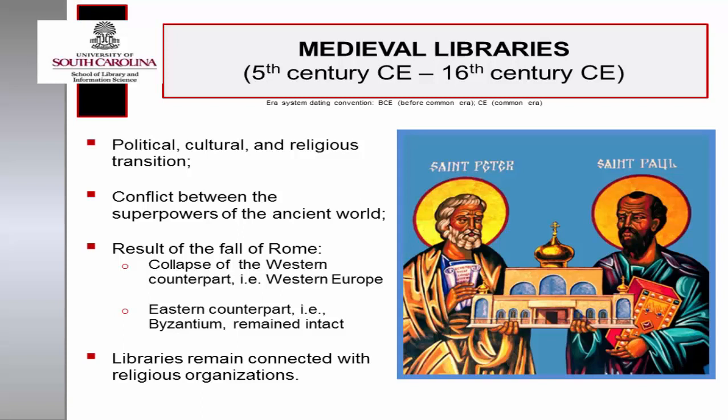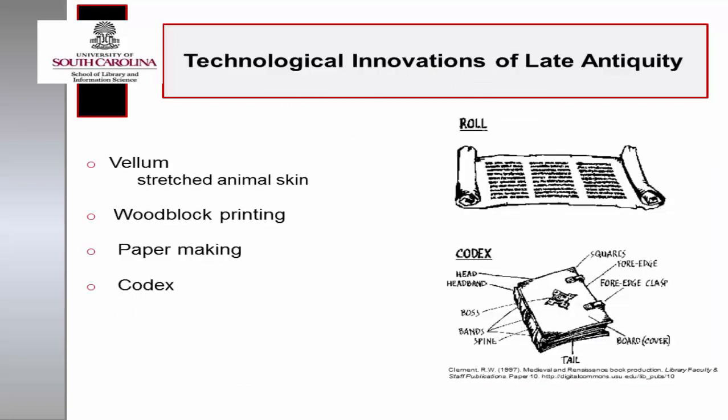During this period, archives and libraries remained closely associated with sanctioned religious organizations. Much like digital and web technologies have impacted today's libraries, technological innovations of late antiquity impacted libraries of the medieval period. Vellum, thin layers of stretched cow skin, replaced papyri as a medium for recording written information. Woodblock printing and papermaking were introduced by China, and manuscript formats shifted from rolls to codices.